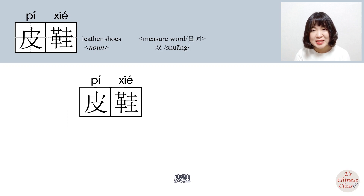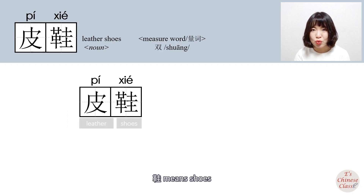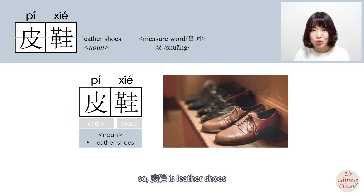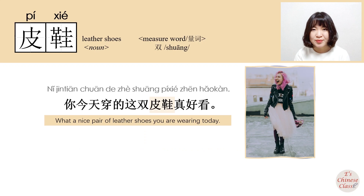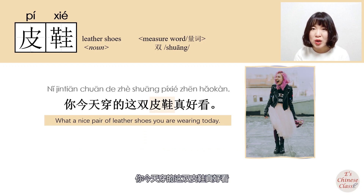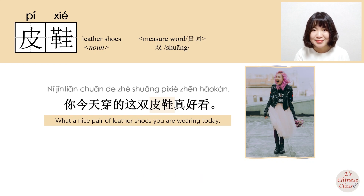皮鞋: 皮 means leather, 鞋 means shoes, so 皮鞋 is leather shoes. Example sentence: 你今天穿的这双皮鞋真好看。 皮鞋.